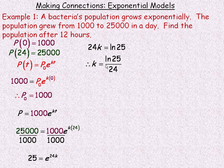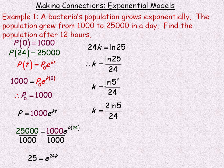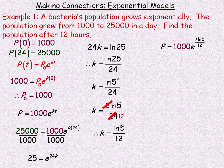This actually simplifies using properties of logarithms. Since 25 is a perfect square (5²), we can write ln(25) = ln(5²) = 2·ln(5). That 2 then divides into 24, leaving 12 in the denominator. So a simpler form of the constant is k = ln(5) / 12, and our formula becomes P(t) = 1,000 · e^((ln5/12)·t).